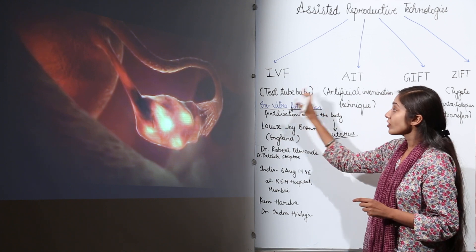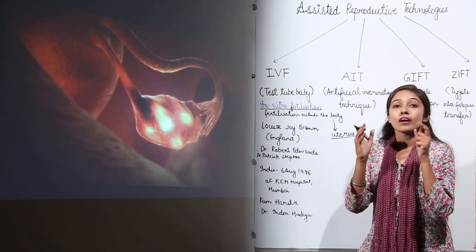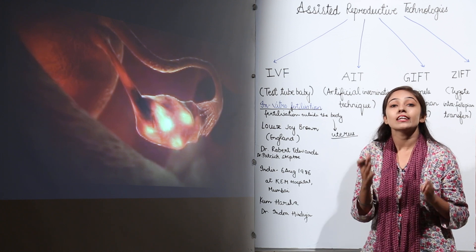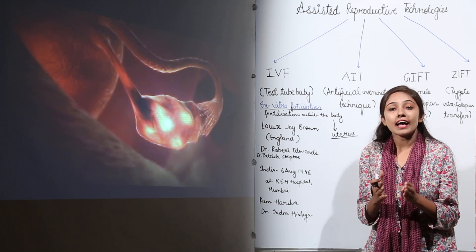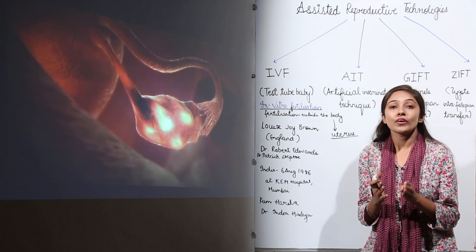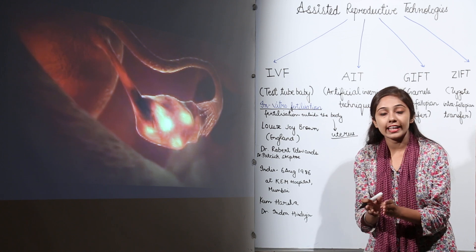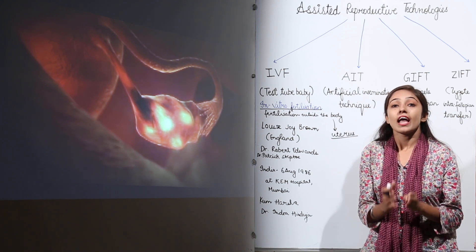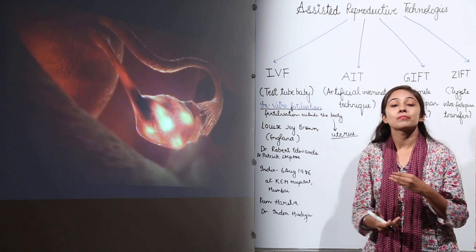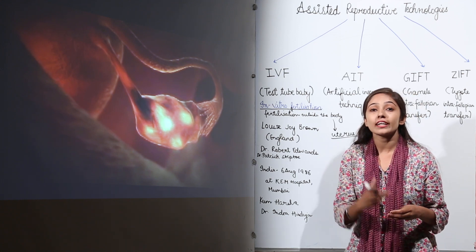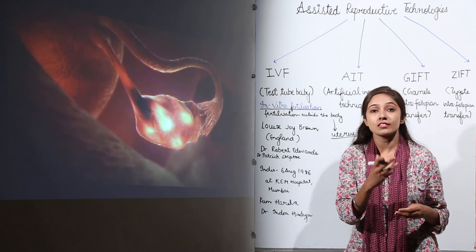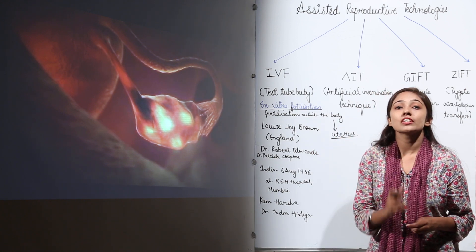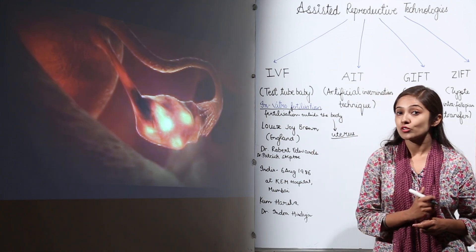To summarize: fertilization occurs outside the body in a laboratory. The sperms and eggs fuse to form a zygote, which is allowed to divide repeatedly to form an embryo. That embryo is transferred to the uterus of the mother, where the child grows normally.